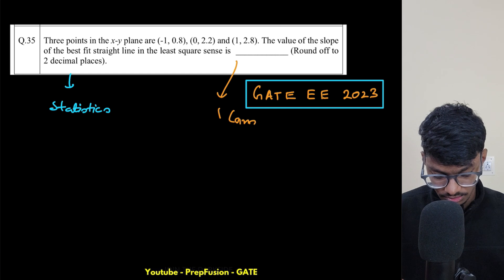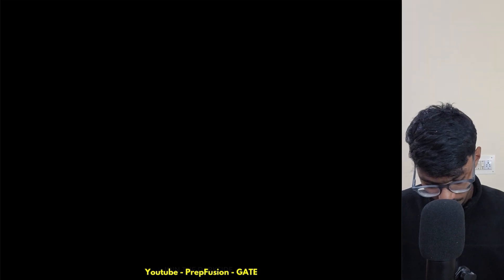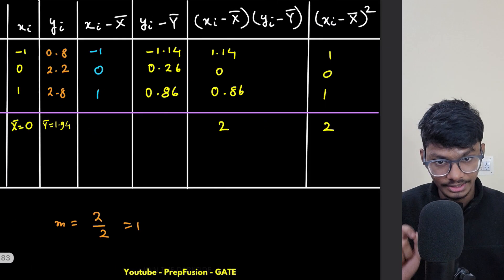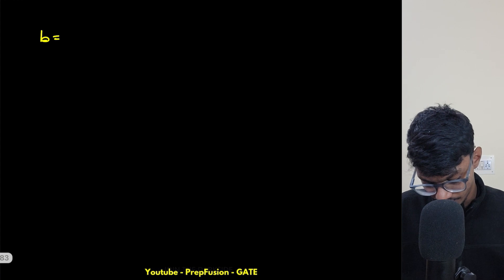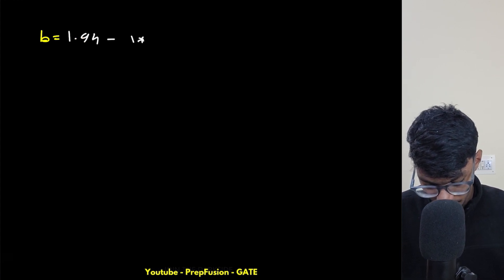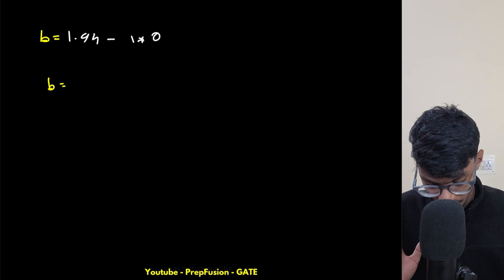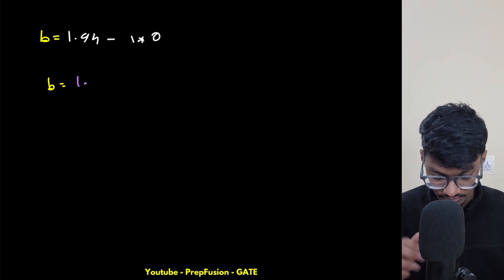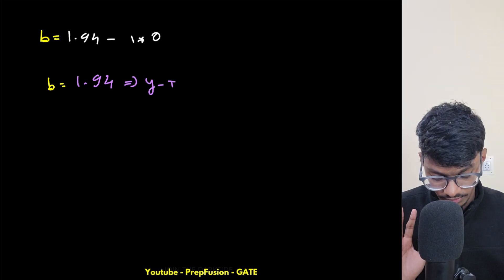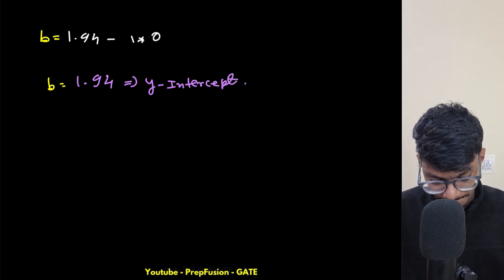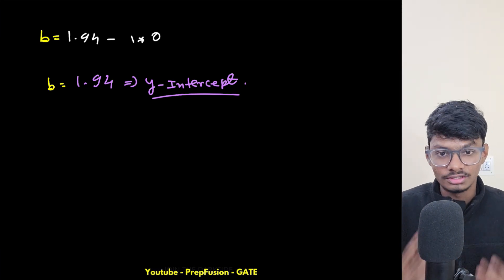The slope of the best fit line is m = 1. To find the y-intercept: b = y-bar - m*x-bar = 1.94 - 1*(0) = 1.94. So if they had asked for the y-intercept of the best fit line, the answer would be 1.94. That's it for this video — see you in the next lecture of the conceptual question series. Thank you for watching.